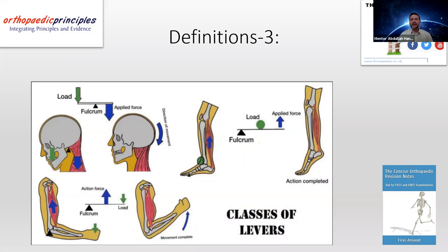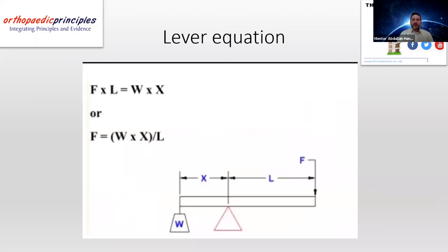A free body diagram is a simplification of the joint into a lever system so you can understand all the forces going through it. Whatever joint you are given, simplify it into a lever system and then apply the forces. The basic equation to calculate forces about a lever is the distance from the fulcrum multiplied by the force applied on each side. In equilibrium, these are equal — meaning both sides are the same. All assumptions are made that the system is in equilibrium, meaning everything is static.